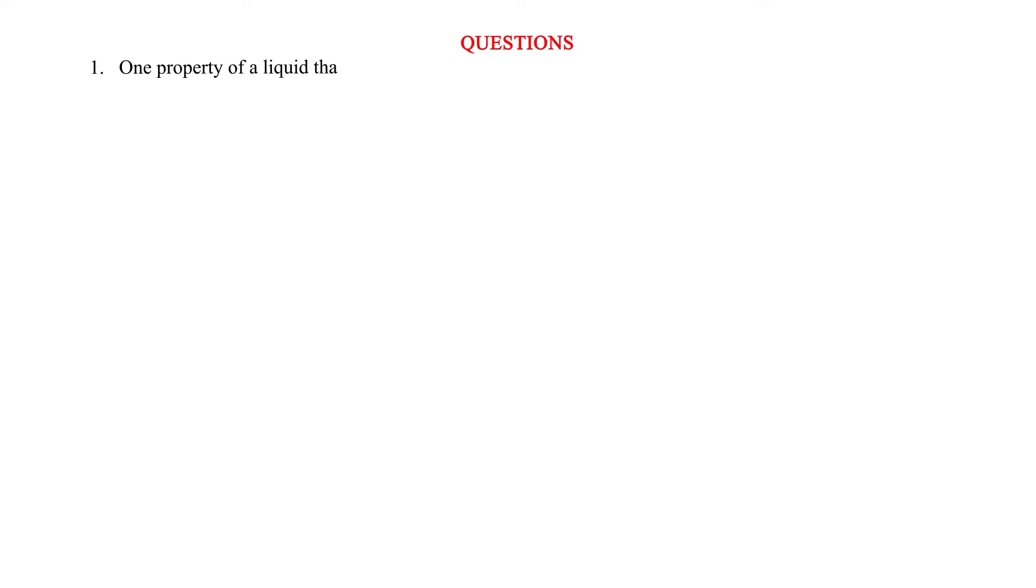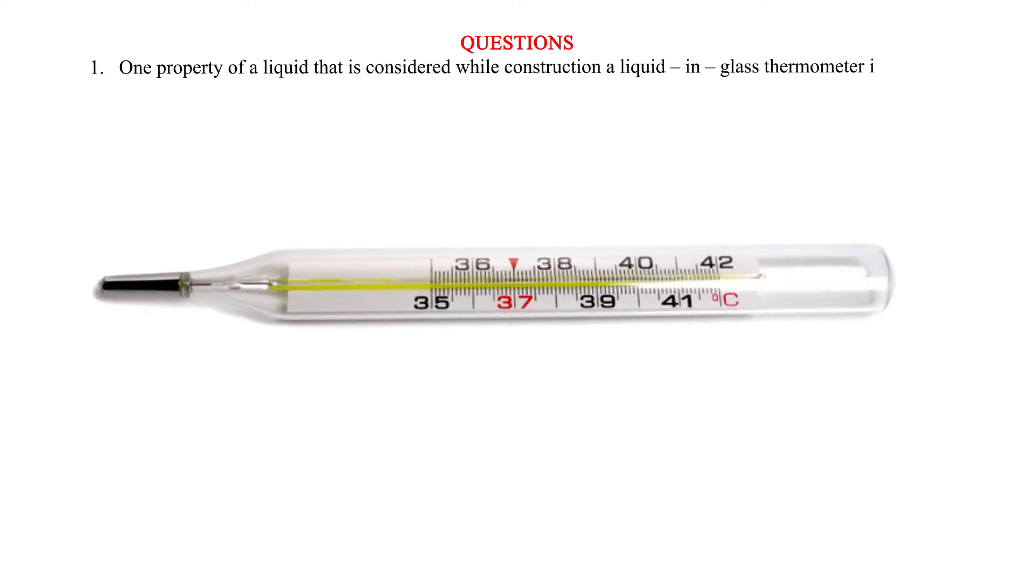One property of a liquid that is considered while constructing a liquid in glass thermometer is that the liquid expands more than the glass for the same temperature change. State any other two properties of the liquids that are considered.